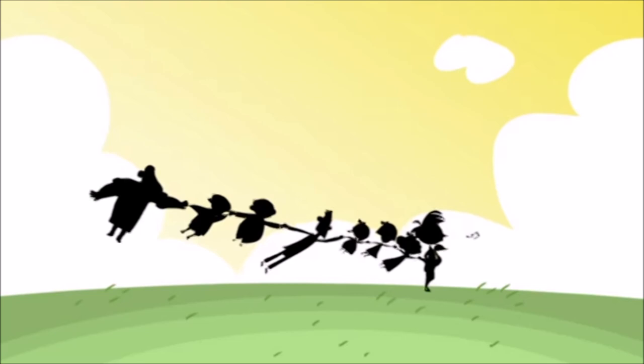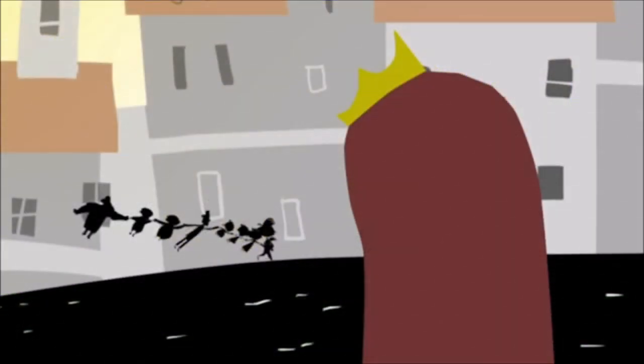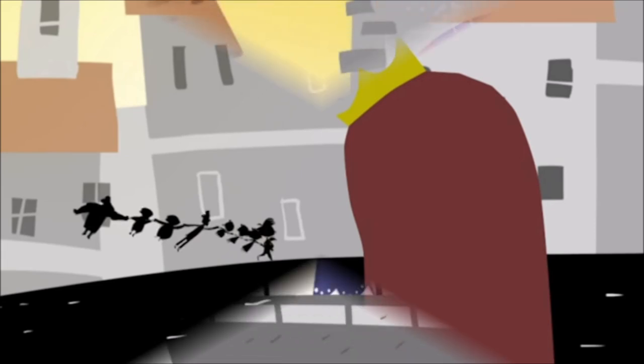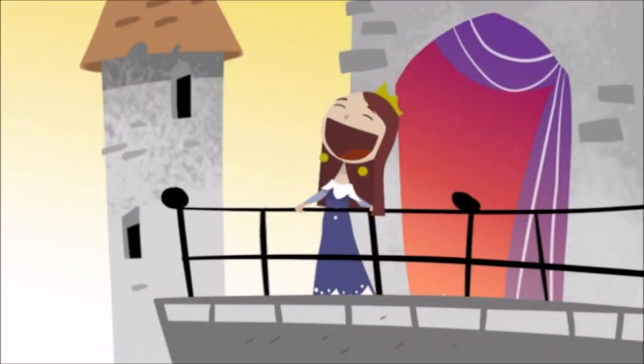When Dunderhead heard this, he went with his goose and all her train before the king's daughter. As soon as she saw the seven people running on and on, one behind the other, she began to laugh very loudly and would never leave off.